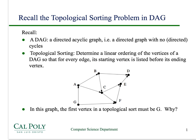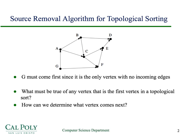In this graph, the first vertex in the topological sort must be G. G must come first because it's the only vertex with no incoming edges. What that effectively means is that there are no tasks that must be finished before G is started.